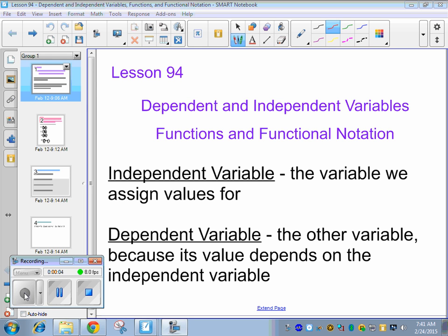Alright, so first we have dependent and independent variables. The independent variable is the variable that we assign values for, normally that would be x. And the dependent variable is the other variable because its value depends on the independent variable, normally that is y. So independent is our input and dependent is our output, whatever we get after we plug something in.